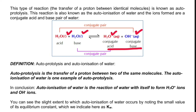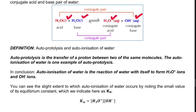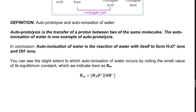We have a transfer of a proton between H2O and H2O. The consequence of this leads us to the auto-ionization of water — the reaction of water with itself to form H3O⁺ ions and OH⁻ ions. What is the equilibrium constant for the auto-ionization of water, or what we refer to as Kw?